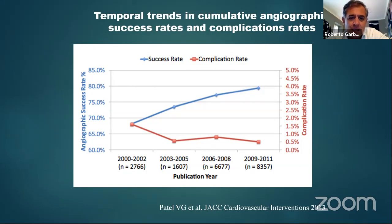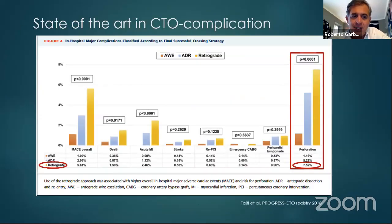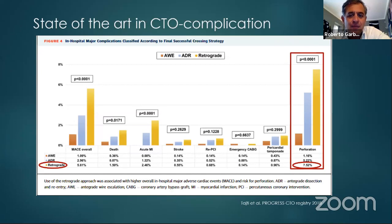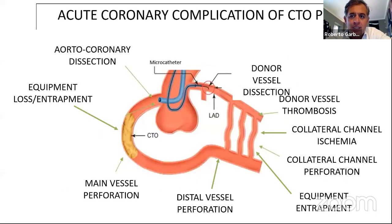When you are able to perform every kind of technique, the complication rate also decreases — experience increases success and reduces complications. Retrograde approach carries a higher risk of complication, particularly perforation, with rates up to 7% in the PROGRESS CTO registry. Complications can also occur with antegrade approaches.